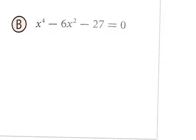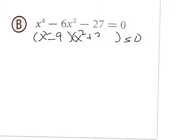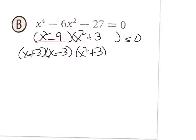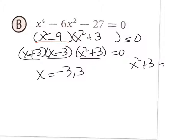This next problem has three terms and looks like a trinomial in quadratic form. I'll try factoring it into two parentheses, each starting with x². The original is degree 4, and the middle term has exponent 2. I need factors of 27 that give −6 in the middle: that's −9 and +3. So it factors as (x² − 9)(x² + 3).